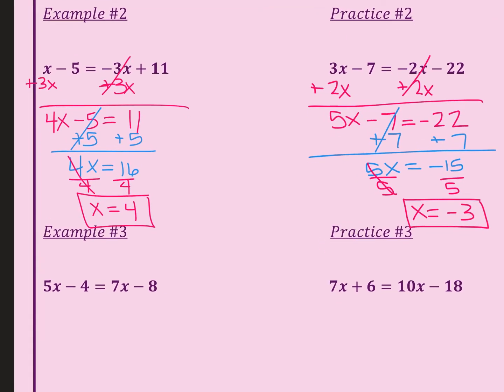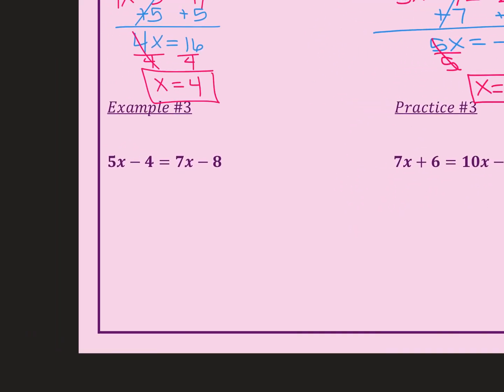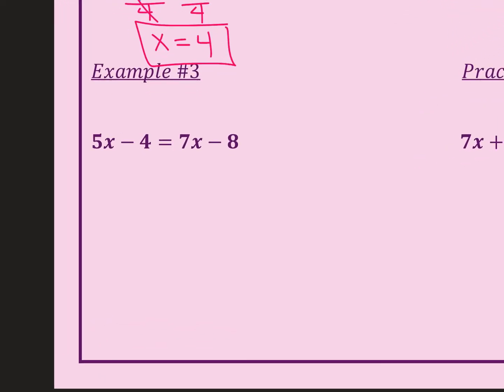Now we're going to go to example number three and practice number three. First we're going to move our x's. So we're going to subtract 7x from both sides. Remember, whatever you do to one side, you have to do the same thing to both sides of that equal sign. Always make sure you do it on each side. Then you end up with -2x - 4 = -8.